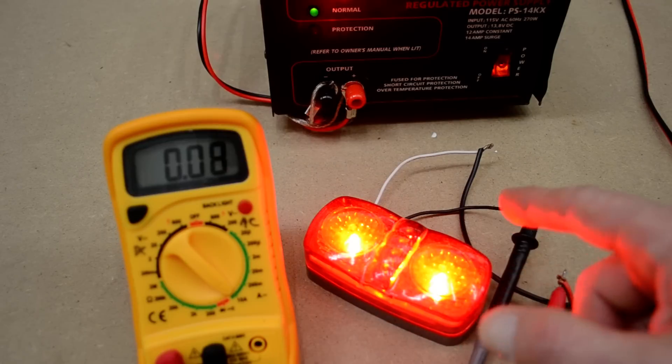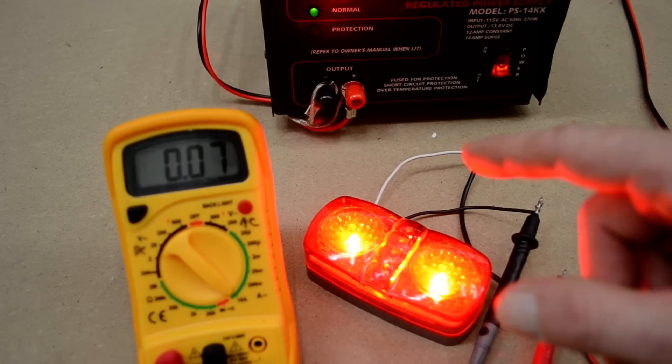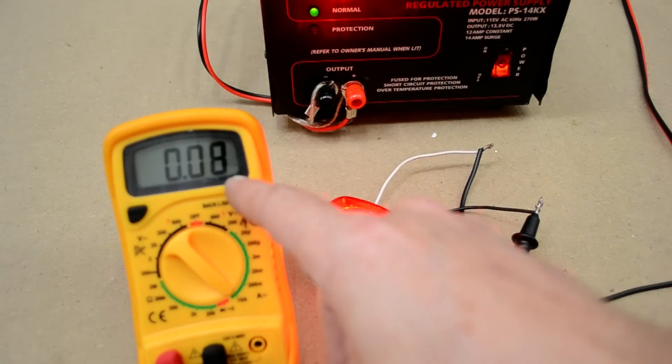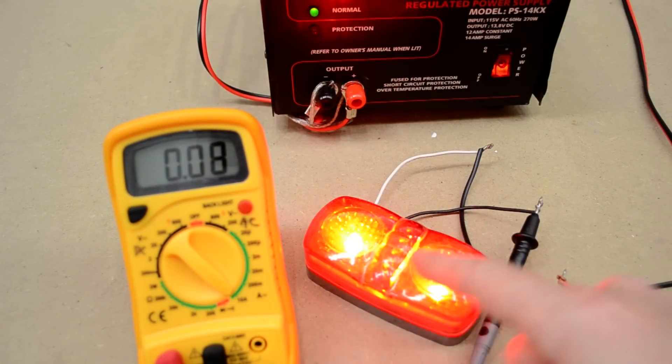Ohm's Law is basically a pie chart with three variables—voltage, amperage, and wattage. If you take 0.08 and multiply it by 12, that tells you the wattage of this bulb.